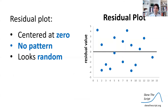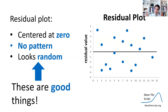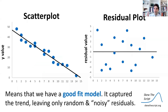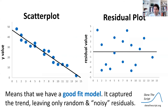This residual plot is centered at a residual value of zero, with data points scattered randomly above and below that zero line with no clear pattern — and these are all really good things. It means we have a well-fit model. We captured the negative linear trend, and the only thing left is random noise, meaning the linear model properly captured the trend and only random scatter remains in the residuals. A random-looking residual plot indicates a good model fit.